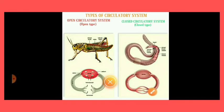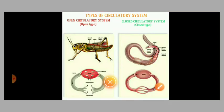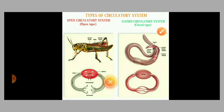Examples of closed type are vertebrates: humans, fishes, frogs, reptiles like snakes, chameleons, lizards, birds, lion, cat, and dog. So this is the closed circulatory system.